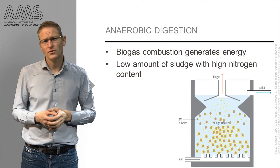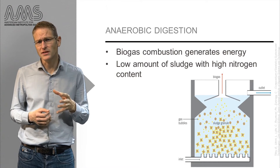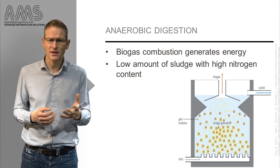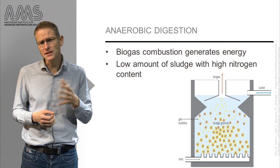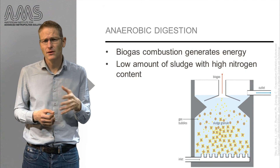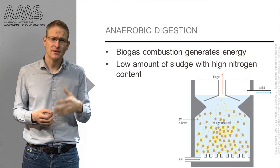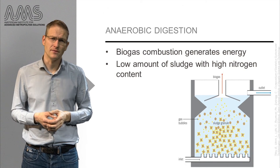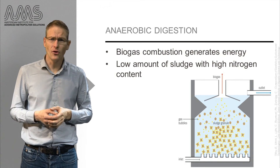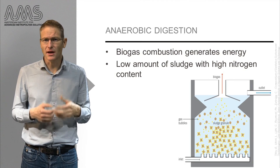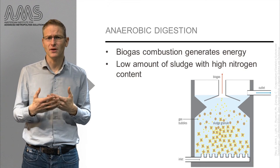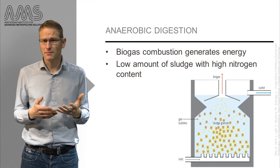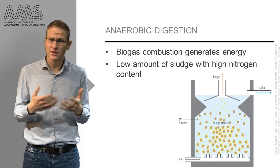Another thing you can do with such concentrated black water is make use of a process called anaerobic digestion. This is a process in which biogas is produced that can then be burned for cooking, heating, or for electricity generation. Furthermore, in this process nitrogen is not transformed into gases — it stays in the sludge and is therefore available as a nutrient in agriculture.